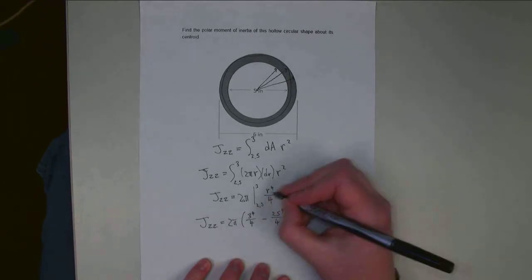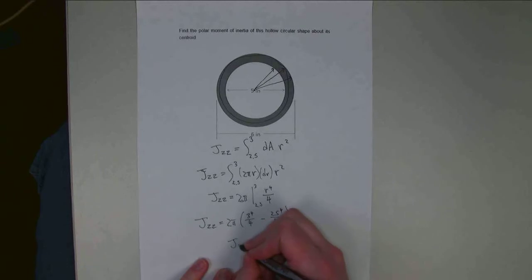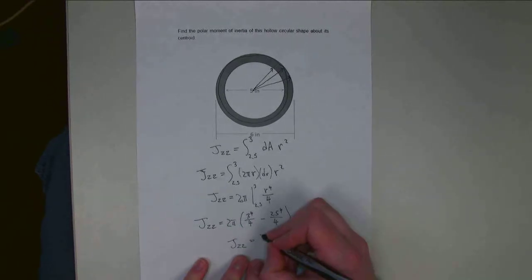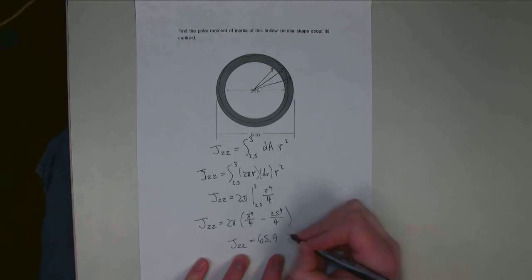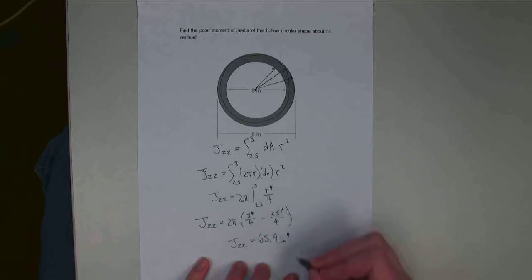And this is 3 inches and 2.5 inches. So Jzz, if I put this all into a calculator, I get a value of 65.9, and it's going to be inches to the fourth as my units here.